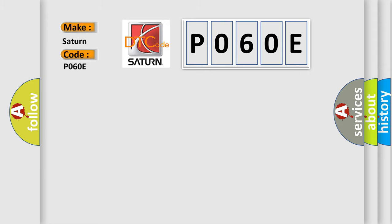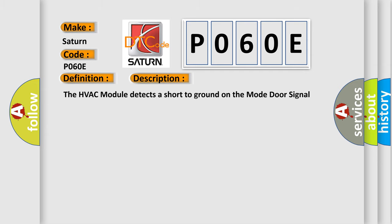The basic definition is Distribution motor feedback, circuit short to ground. And now this is a short description of this DTC code. The HVAC module detects a short to ground on the mode door signal circuit.